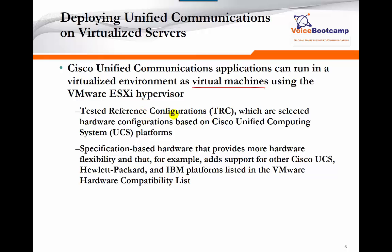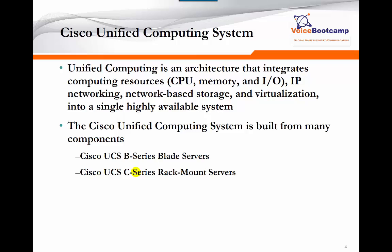Cisco does provide you a virtual machine template which you can download from the Cisco website. Based on the template, you must continue the installation specification based on hardware, which provides more hardware flexibility — for example, added support for UCS. HP and IBM platforms are listed on the VMware compatibility list. Cisco Unified Computing System, or UCS, is an architecture that integrates computing resources such as memory, CPU, and I/O interface into a single system. On a single server you can share the physical memory among multiple virtual machines.